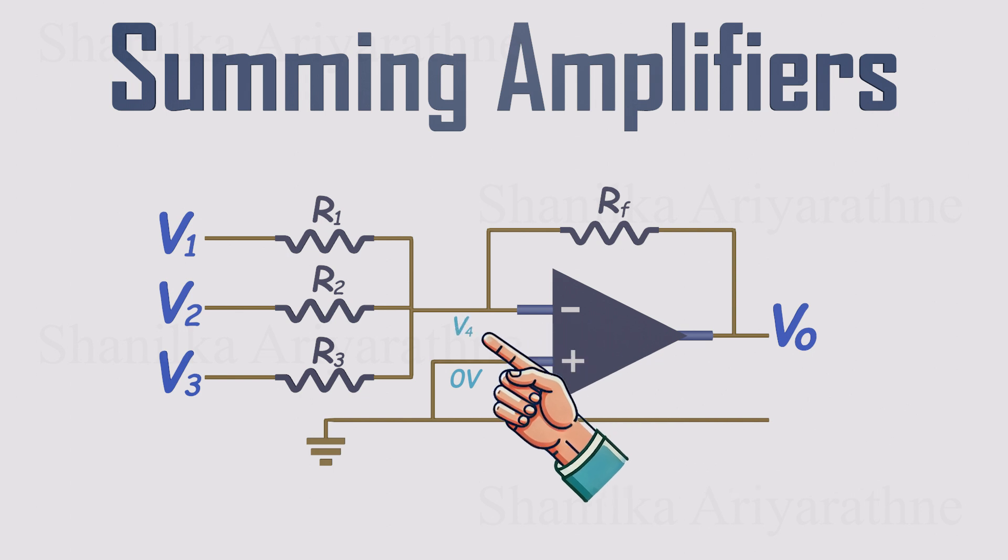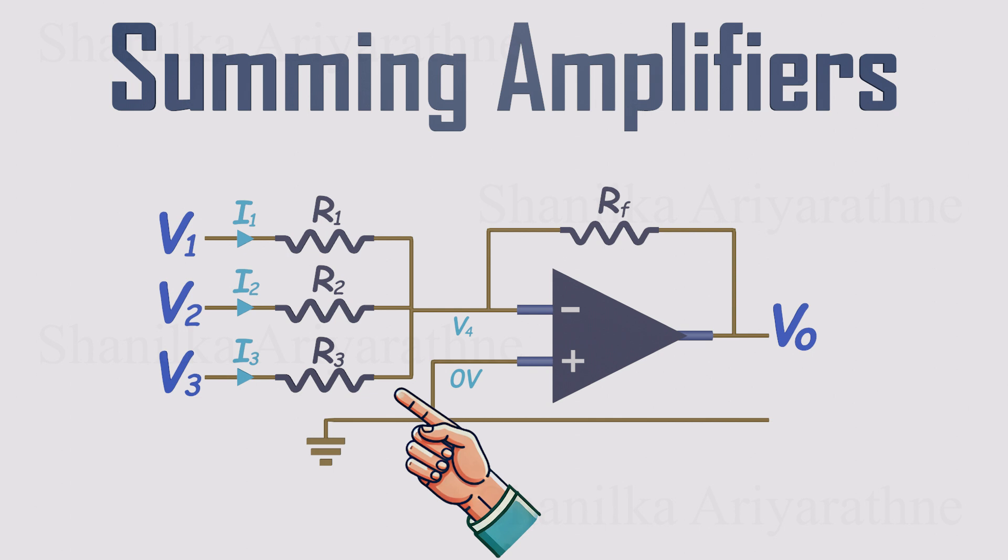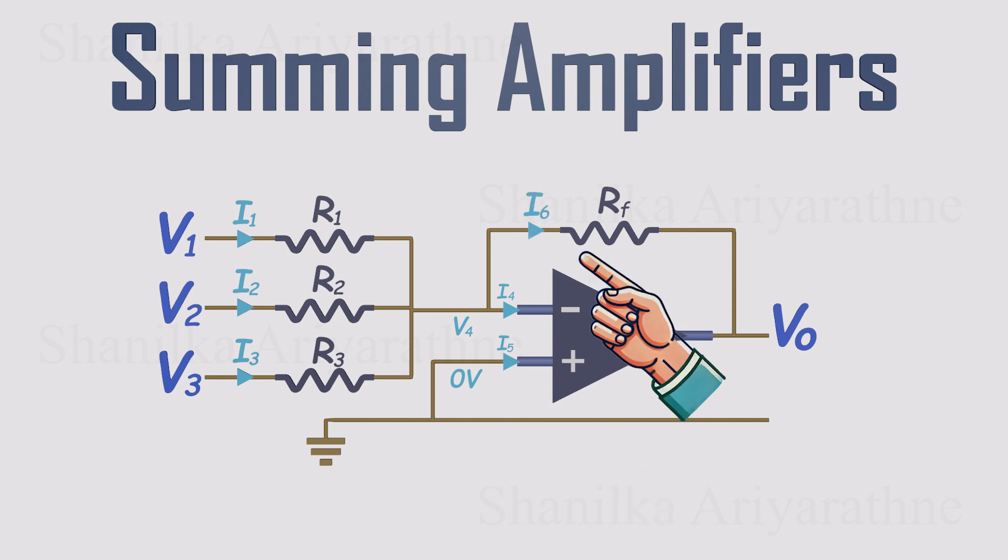Now for currents. Through the three input resistors, define currents I1, I2, and I3, each flowing from its source toward the inverting node. The tiny currents that would flow into the op-amp pins are I4 for the inverting input, and I5 for the non-inverting input. And for the feedback path, we'll call the current through RF I6, flowing from the inverting node toward the output.